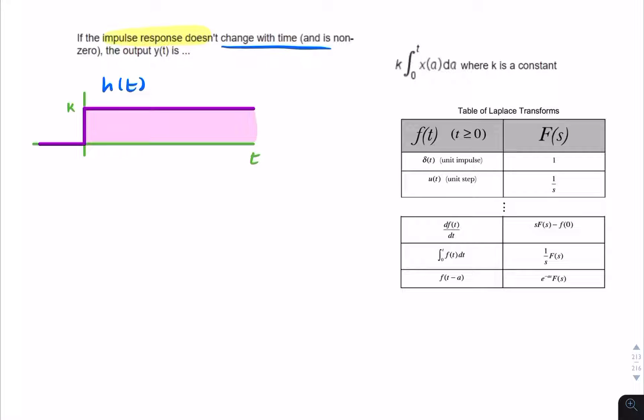Why is it zero for negative time? Because it's a causal system. So we're talking about a causal system with H of T zero for negative time.